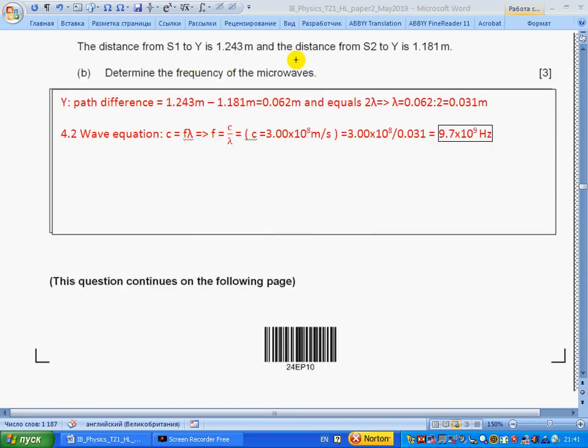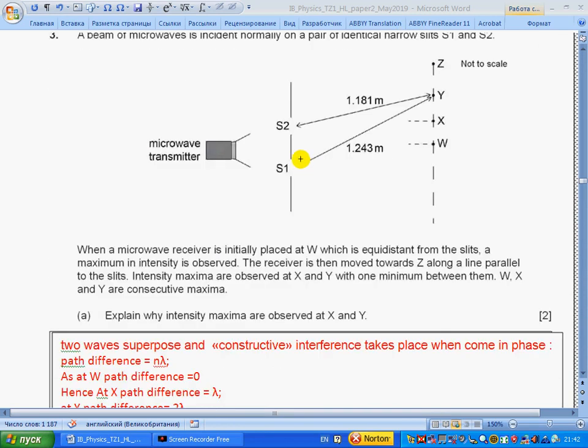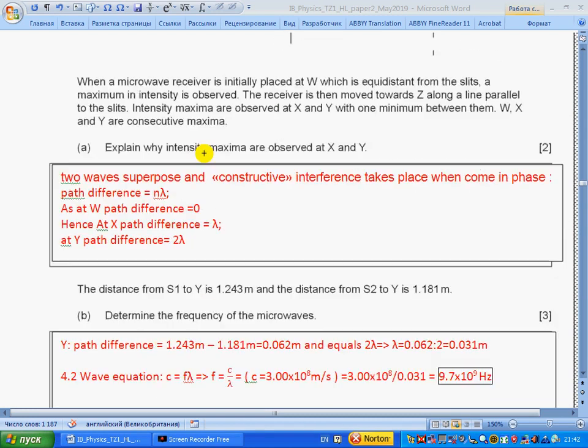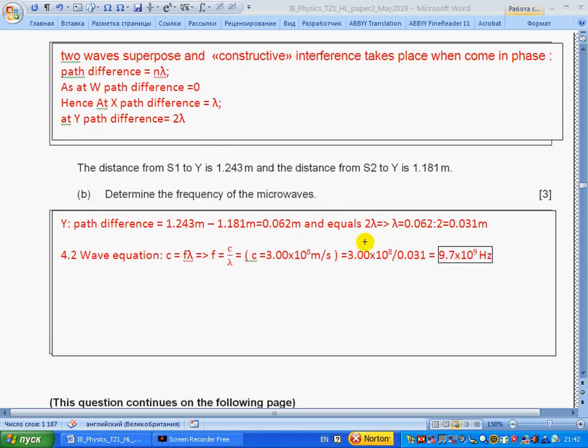The distance from S1 to Y is given, and from S2 to Y is given. Determine the frequency. Path difference we can find if we subtract from one path the other path, so we find 2 lambda as we explained before. This means that lambda will be half of this path difference, 0.031. From section 4.2, wave equation: c equals f lambda, written for frequency c over lambda. Recalling that c is the speed of light, we get the value for frequency.